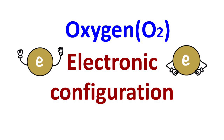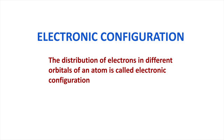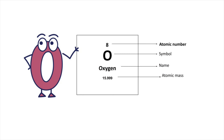Welcome to Aurora Chemistry for Everyone. We are here to discuss writing the electronic configuration of oxygen. The arrangement of electrons in different orbitals of an atom is called electronic configuration. To write electronic configuration, we should know the atomic number of oxygen, which is 8.